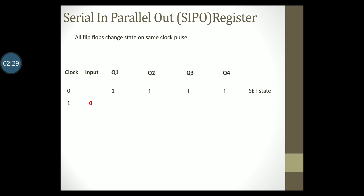On the next clock pulse, this 0 will appear at the output on Q1. The output at Q1 will get shifted to Q2. The output at Q2 will get shifted to Q3 and the output at Q3 will get shifted to Q4. The parallel output at the register is now 0 1 1 1. All this is happening on the first clock pulse.